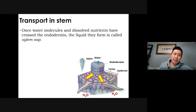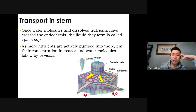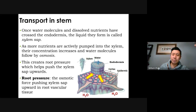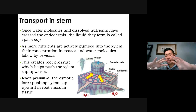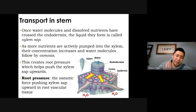Once you're in the vascular bundle, you get sucked up into the stem. Once the water reaches the xylem, it's now called sap — xylem sap. As more nutrients come in, more water accumulates because you're sucking it up, which creates root pressure. As you accumulate more water, root pressure will push the sap upward. As pressure accumulates, you have to push it somewhere, and the only way to go is up, driving water upward through the stem.